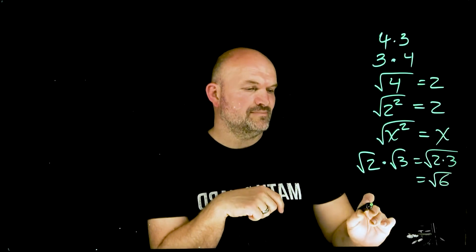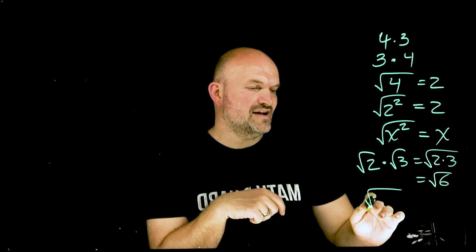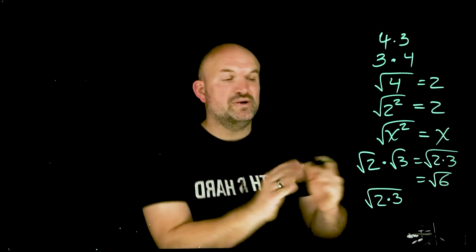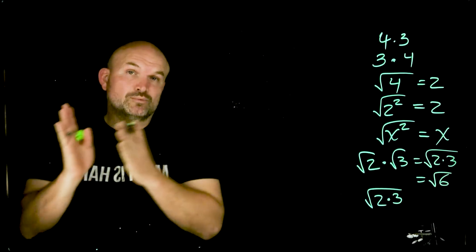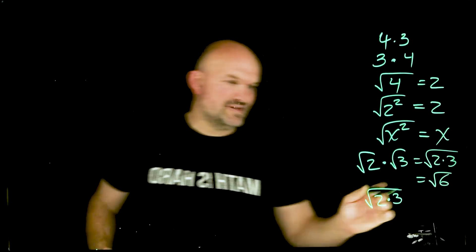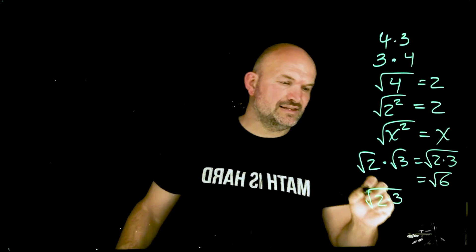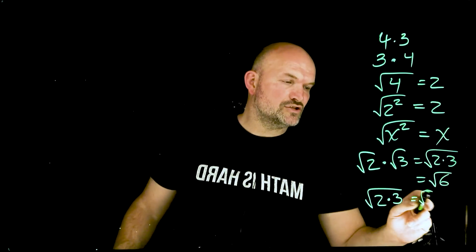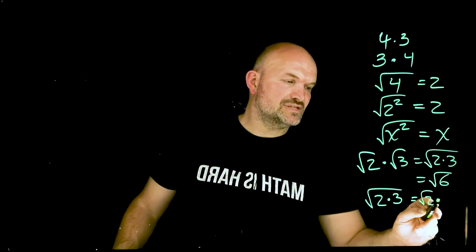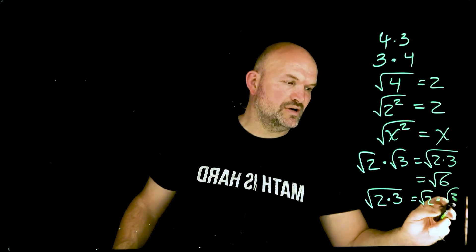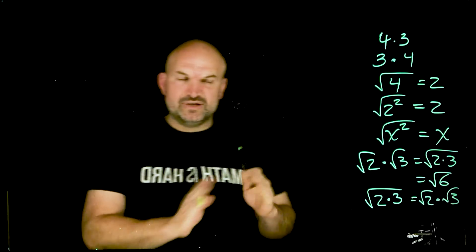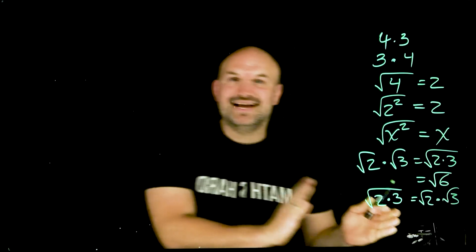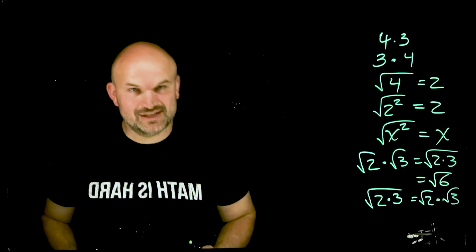This is important because if we have a product like 2 times 3 under a radical, we can go in the reverse direction. We can rewrite the square root of 2 times 3 as the square root of 2 times the square root of 3. We can use that rule in one direction as well as the other.